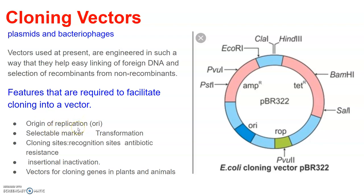The first feature required is the ORI, or origin of replication. This is a sequence from where replication starts, and any piece of DNA when linked to this sequence can be made to replicate within the host cell. As you can see in the diagram, this sequence is also responsible for controlling the copy number of the linked DNA. So if one wants to recover many copies of the target DNA, it should be cloned in a vector whose origin supports a high copy number.